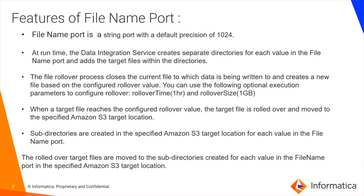The filename port is a string port with a position of 1024. At runtime, it creates directories in S3 buckets and places data files under those directories. The key parameters are rollover time and rollover size for the data file — once the rollover value or rollover size is reached, it creates a subsequent part file and starts loading data into those files.